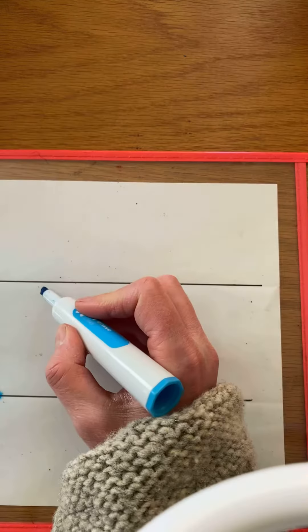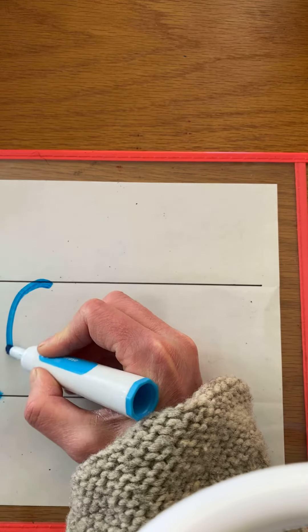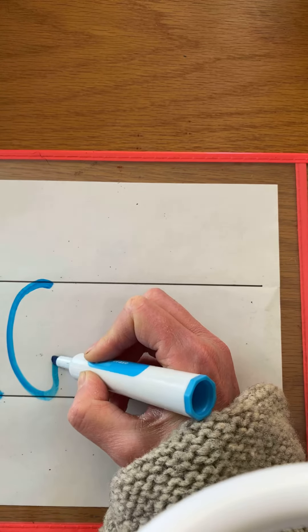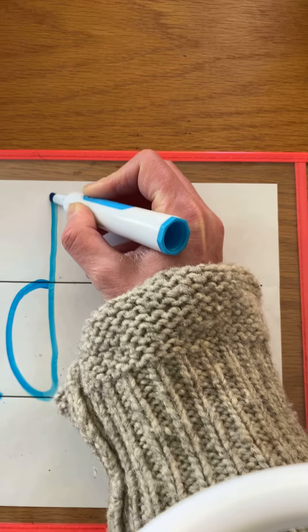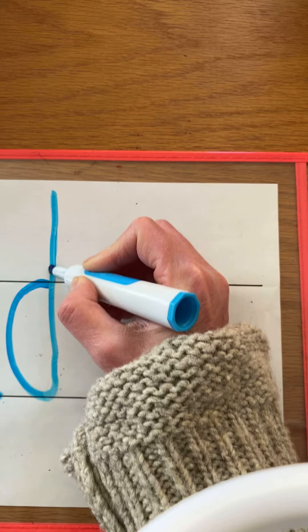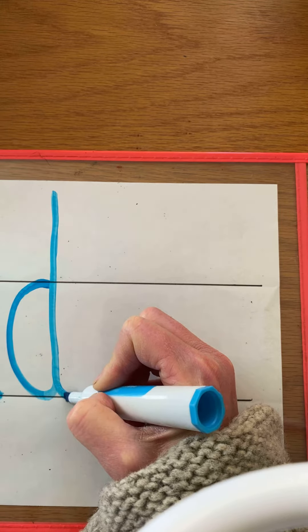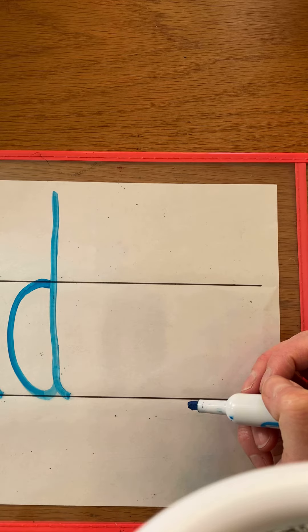Now we're gonna turn a C into a lowercase d. So we start with our C and then we're gonna go straight up to turn it into a D. Keep going up higher, then straight back down like you're sliding down a pole. Voila! It's magic! We turned the C into a D.